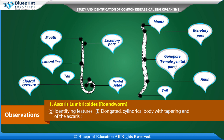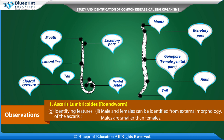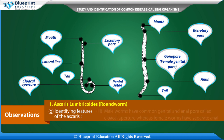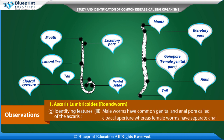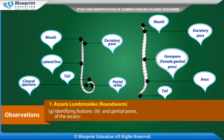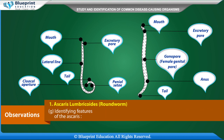Identifying features of Ascaris: Elongated cylindrical body with tapering ends. Male and females can be identified from external morphology. Males are smaller than females. Males have a curved tail whereas females have a straight end. Male worms have a common genital and anal pore called the cloacal aperture, whereas female worms have separate anal and genital pores. Body is covered by a cuticle resistant to host digestive juices. It derives food from the host body.